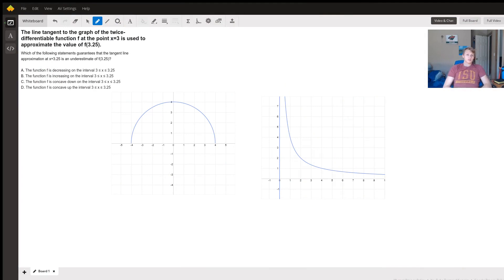Hi, so here we have a question about using a tangent line approximation for a twice-differentiable function and finding out what property of the function guarantees that the approximation will be an underestimate of the actual value of the function at a point further on down the line.